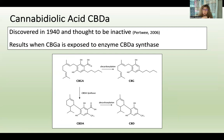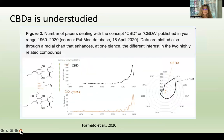CBDA is what occurs in the raw plant when it's harvested. You can find it in both hemp and in cannabis that contains THC. When CBDA is decarboxylated — heated up — it converts to CBD. So it is the precursor to CBD. If you buy a bottle of CBD oil, it started off as raw plant with CBDA and was heated during processing.